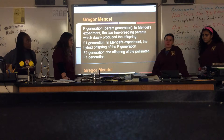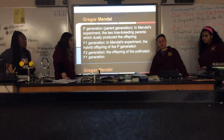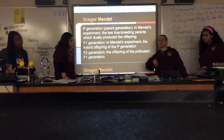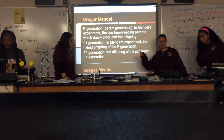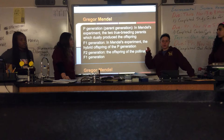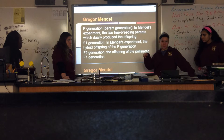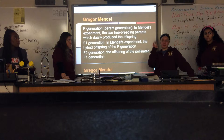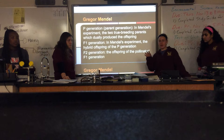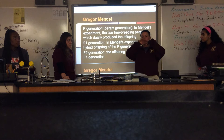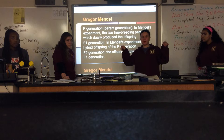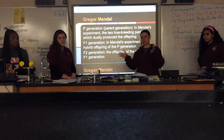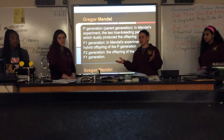The P generation is also known as the parent generation. In Mendel's experiment, the two true breeding parents were the P generation, and they produced offspring — the first was the F1 generation, the hybrid offspring of the P generation. F stands for the Latin word 'filial,' which means son. The F1 generation is basically the first generation of offspring that came directly from the P generation, which were two true breeding varieties, and when they mix together through hybridization, they produce many different types of plants.